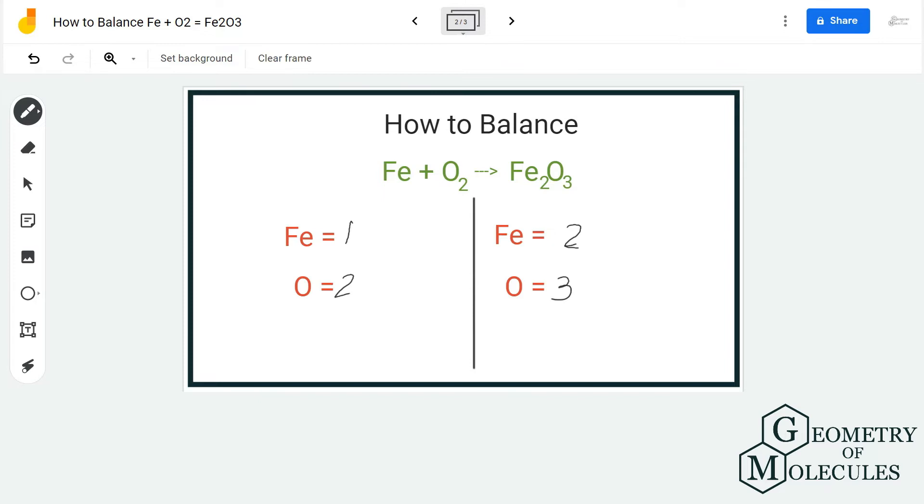Now we are going to try and make this number even because it is easier to balance out equations in which there are even numbers of atoms on both sides. So for doing that, I am going to put a coefficient 2 over here. So now we have six oxygen atoms over here because three into two is six, and we have two into two, four iron atoms over here.